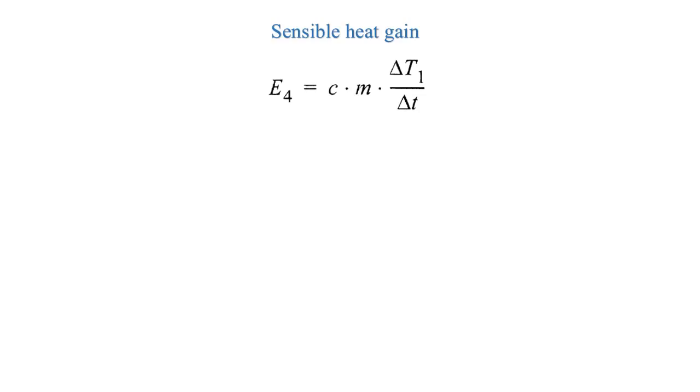The sensible heat gain is given by the formula where C is the specific heat of copper, M is the mass, and ΔT1 is the difference in temperature of the collector. ΔT is 60 if you take results every 60 seconds.